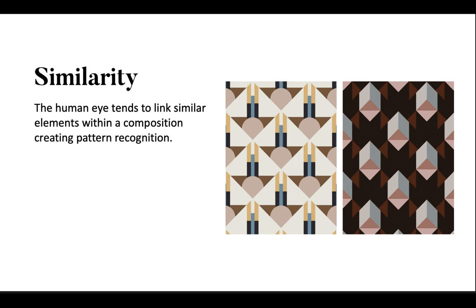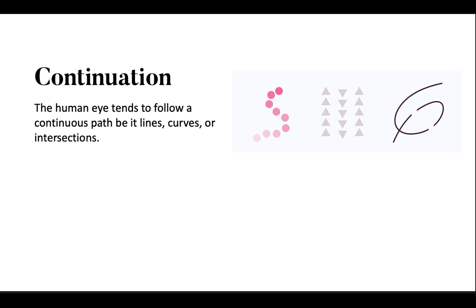Continuation principle states that the human eye tends to follow a continuous path, be it lines, curves, or intersections. When the eye is guided to move from one object to another, we speak about the law of continuity. Our perception tends to see objects arranged in lines or curves as more related or grouped. When you see groups of elements like photo galleries, sliders, tabs, or even simple lists, you may now notice they are using continuation. The objects are placed nearby and they guide the eyes to jump from one to the next.